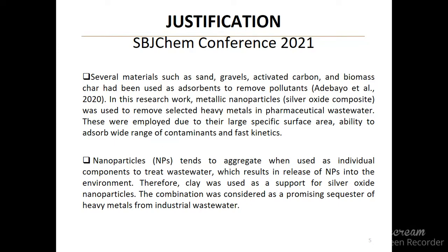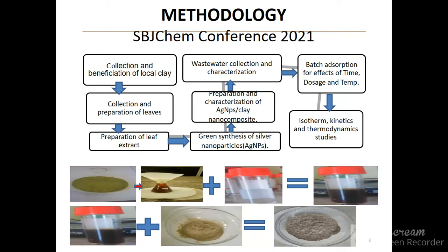That is the reason why they had to be supported or anchored on clay. In the methodology, local clay was collected and pretreated. The plant leaves used for the reduction of silver — specifically Parkia biglobosa leaves — were converted into aqueous leaf extracts, which were used for the reduction and preparation of silver nanoparticles. The nanoparticles were thereafter immobilized on the prepared benefited clay to form a silver nanoparticle clay composite.